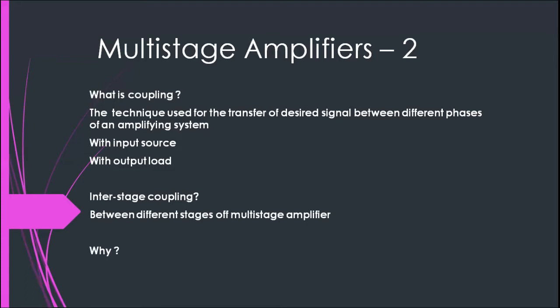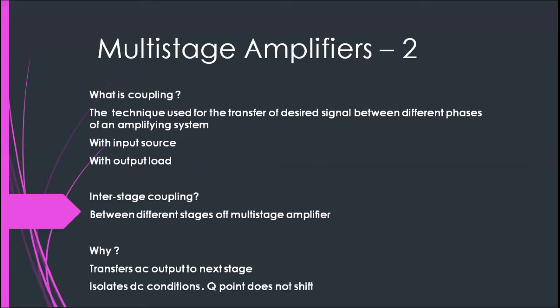Why do we use this inter-stage coupling? There are many reasons. The basic reason is that you need to transfer only an AC signal from one stage to the next stage. No DC signal should go to the next stage, because what we are amplifying is an AC signal, not a DC signal. The second reason is associated with the first: you cannot give the DC conditions of the first stage to the second stage, because if you do, the quiescent point of the next stage will shift.